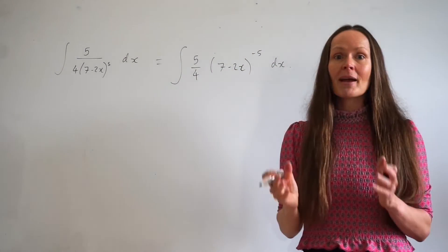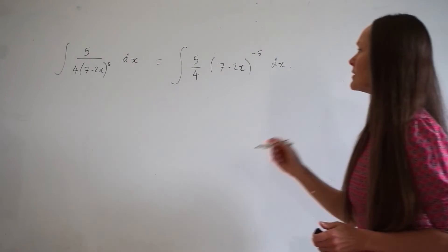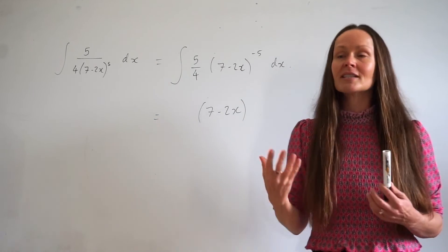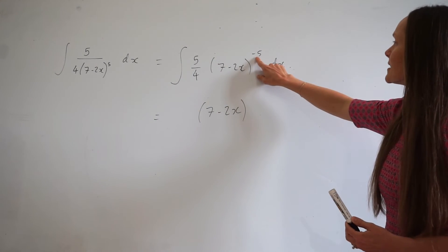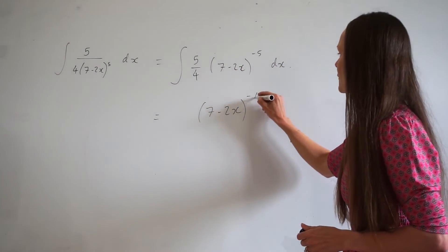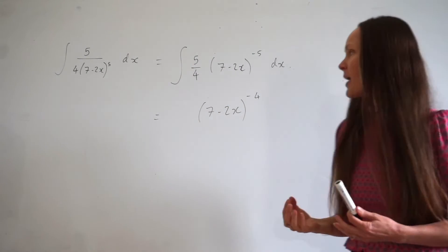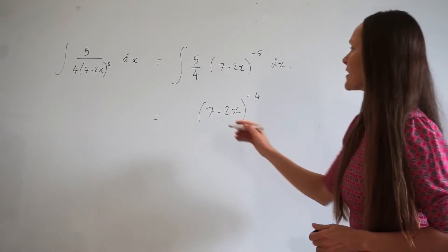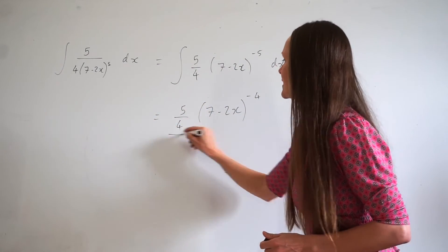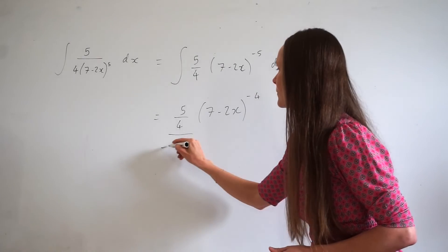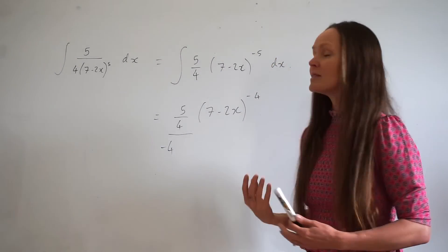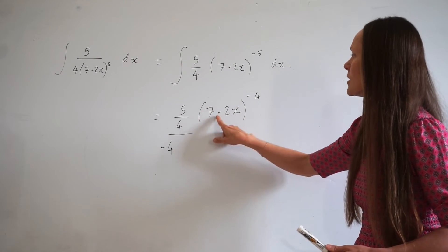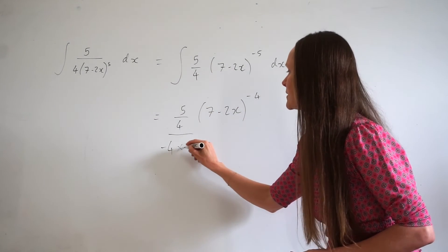The brackets remain the same: 7 minus 2x. The first step is to increase the power by 1, so negative 5 plus 1 is negative 4. Next, divide by the new power, so divide by negative 4 — take the coefficient already in front, which is 5 quarters, and divide by negative 4. Thirdly, divide by the coefficient of x, which is negative 2.